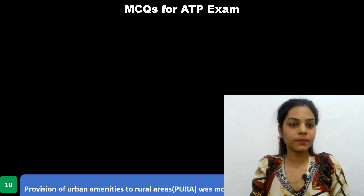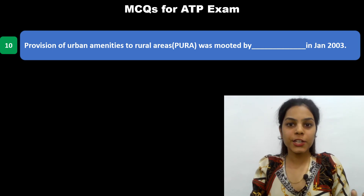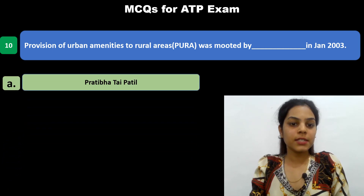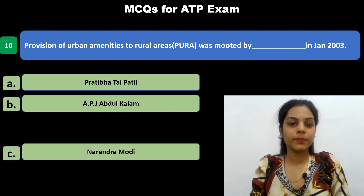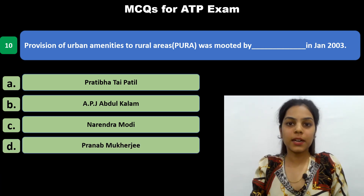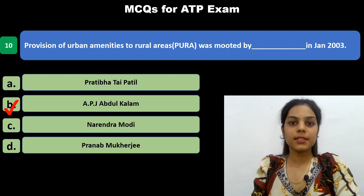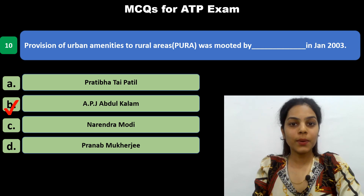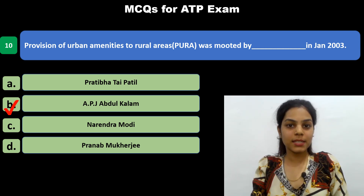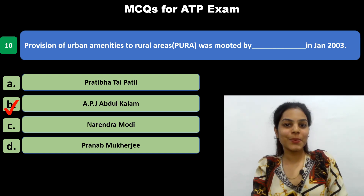The last MCQ: Provision of Urban Amenities to Rural Areas, i.e. PURA, was mooted by whom in January 2003? Options are: Pratibha Patil, APJ Abdul Kalam, Narendra Modi, and Pranav Mukherjee. The answer is APJ Abdul Kalam. We have now discussed 10 MCQs about this scheme. If you liked this video, kindly like, subscribe to our channel, and thank you so much for watching.